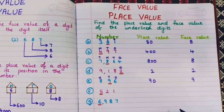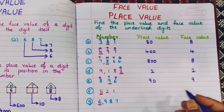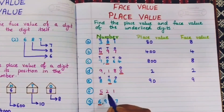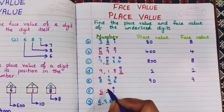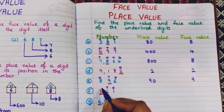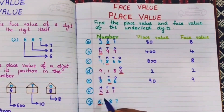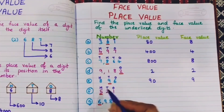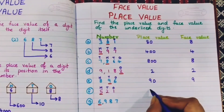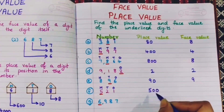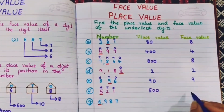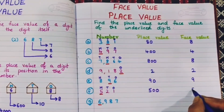Next, 521. Positions: ones, tens, hundreds. 5 is in the hundreds position, so the place value is 500 and the face value is 5.